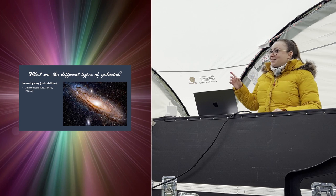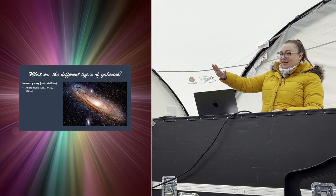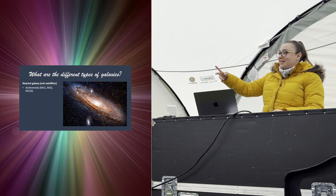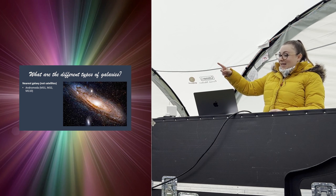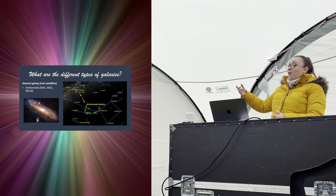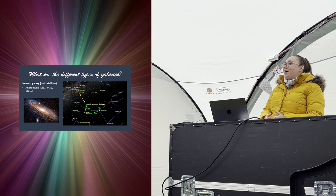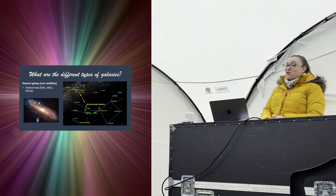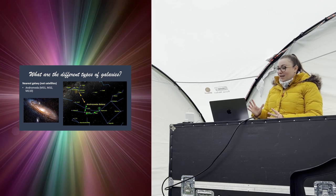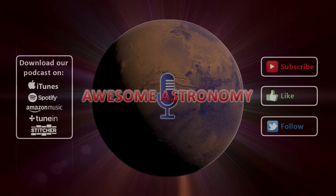Our nearest galaxy is Andromeda, a spiral galaxy seen half-inclined from edge-on to face-on. It has a couple of prominent satellite galaxies — M110 and M32. Andromeda is visible to the naked eye, and if you were interested in finding it tonight you'd know where to look. And that's the end — that covers the different types of galaxies.